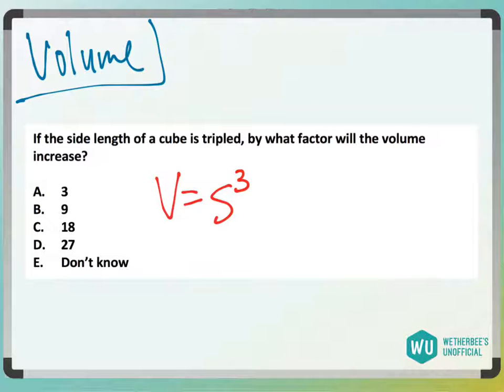So the best thing to do for this would be to pick a number. Let's say the side length is 1. If the side length is 1, the volume is 1 cubed, and that is 1.